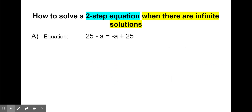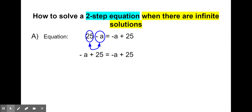Let's take a look at the same example again in a slightly different way. We have 25 minus a equals negative a plus 25. Notice on the left we have positive 25 and a negative a, and on the right we have the same — positive 25 and negative a. They're the same terms with the same signs, just in a different order. Taking the 25 and negative a on the left and switching their places — keeping the signs for the correct terms — I can rewrite the equation as negative a plus 25 equals negative a plus 25.